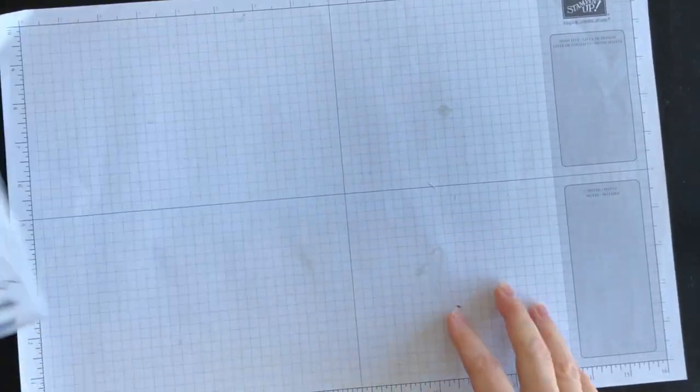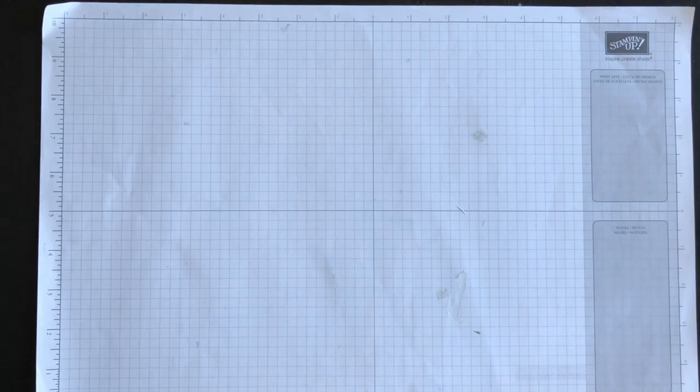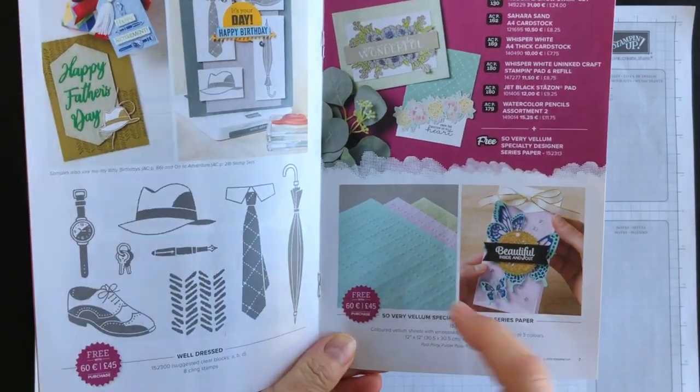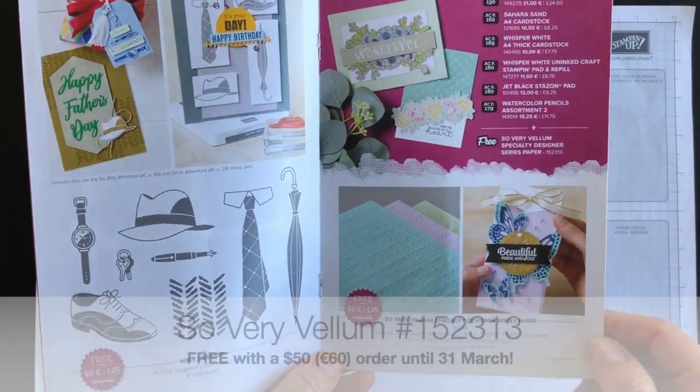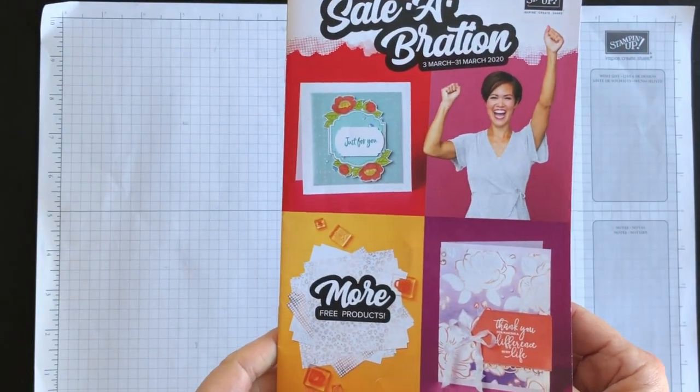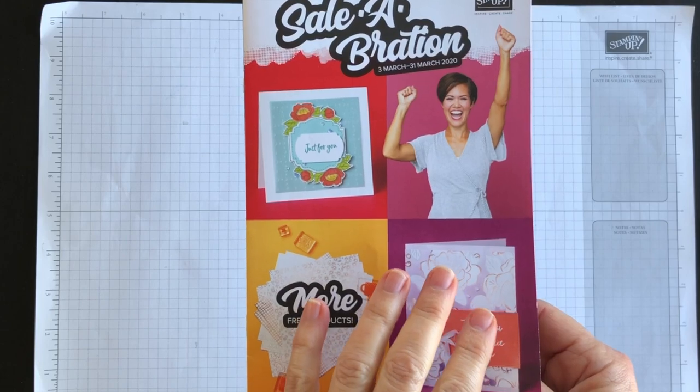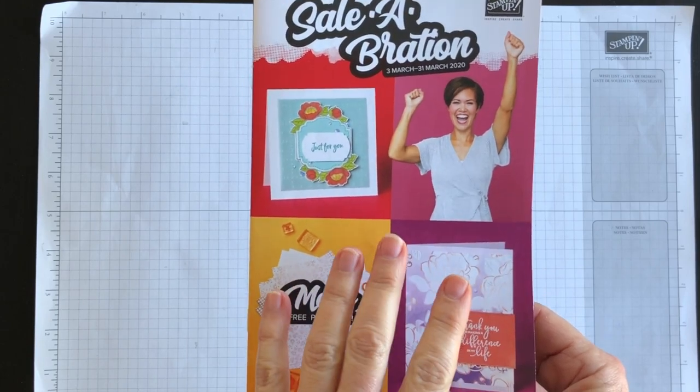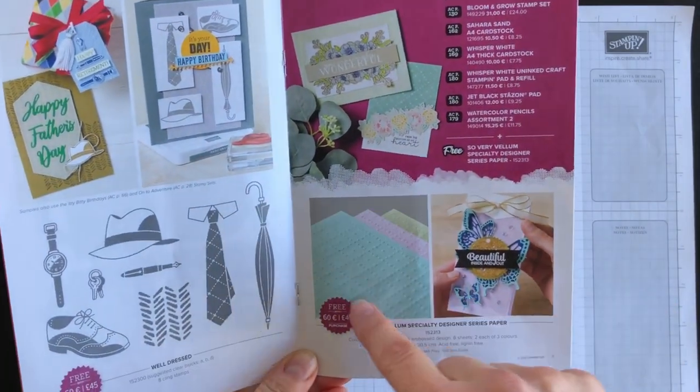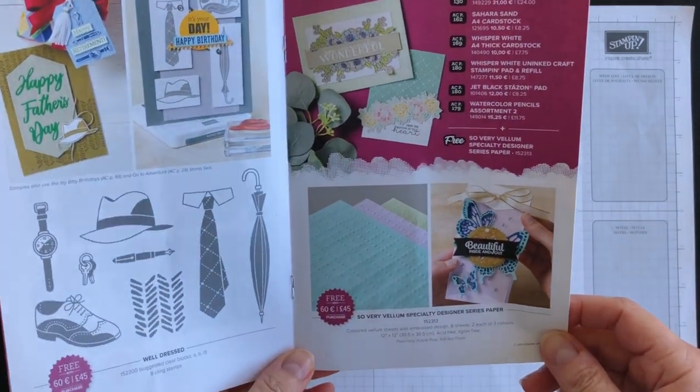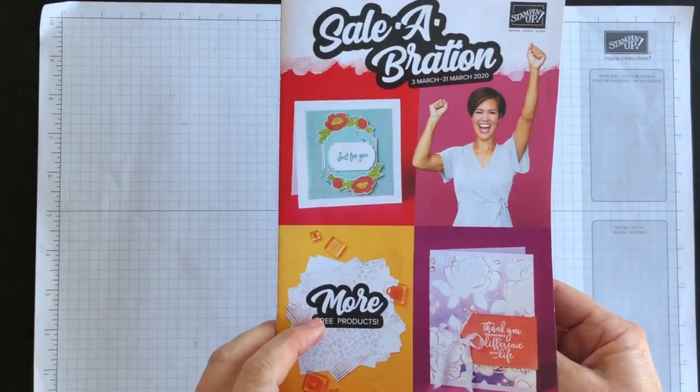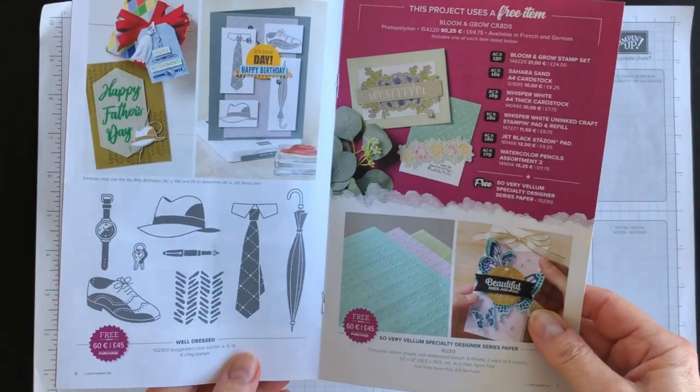But I also want to introduce to you a new product that I'm going to put on my card as well. It's the SewVeryVellum Specialty Designer Series paper, and this product is free with a $50 order only until the 31st of March. Now if you live in Europe and you order from my European store, you can qualify for this paper with a €60 order, and it's on page 7 of the second release of the Celebration Catalog.